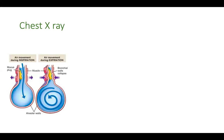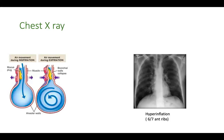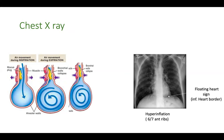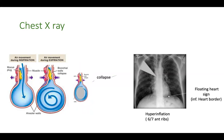Chest X-ray usually shows hyperinflation, because inspiration is an active process so air comes in, but expiration being passive, air gets trapped inside the alveoli. This may be described as six or seven anterior ribs visible in the mid-clavicular line, or a floating heart sign. In some cases, mucus secretion may completely obstruct the bronchioles leading to collapse, so you can also see patchy atelectasis on X-ray.